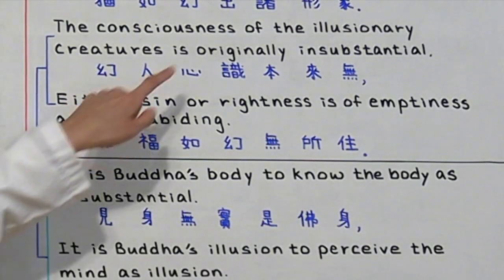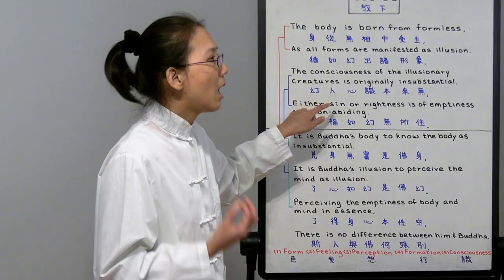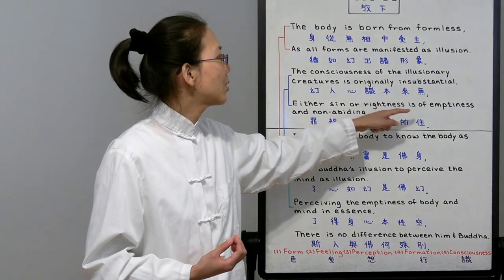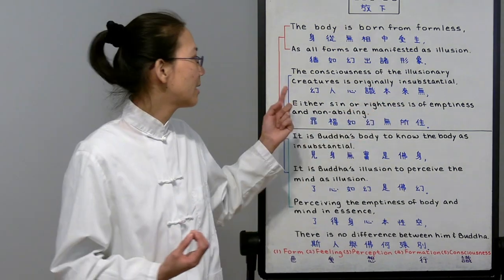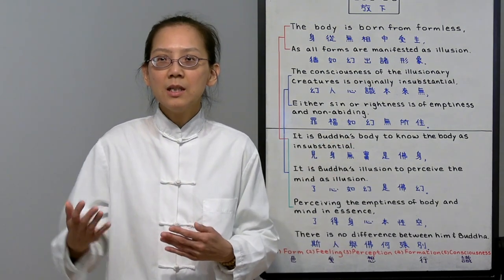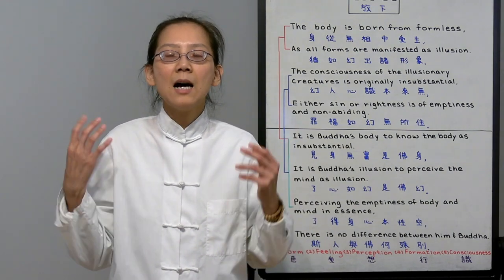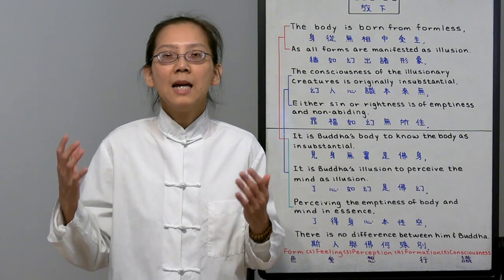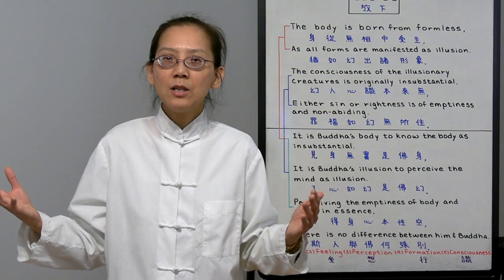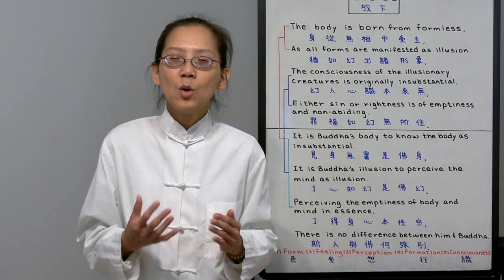Lastly, either sin or rightness is of emptiness and non-abiding. Karma, retribution of our sin and rightness, they are also empty in nature. And it's not abiding. It's always changing. When it's cause and condition, it's constantly changing and has duality, which means it's not abiding. It must be empty in essence. So anything that has a form that is changing is not for us to rely on. We need to go back to the essence, which is emptiness.